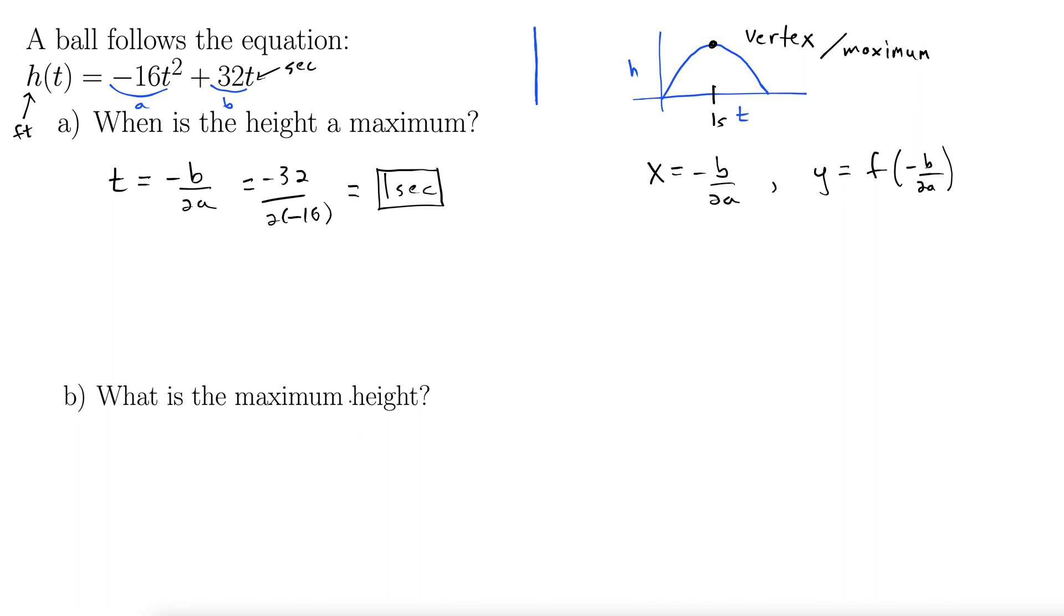Well, what is its maximum height? Well, now we're going to use this bit here where we just plug t back into the original equation. So height, the maximum height at 1 second is, well, let's see. So we have negative 16 times 1 squared plus 32 times 1. Well, that's 16 feet.